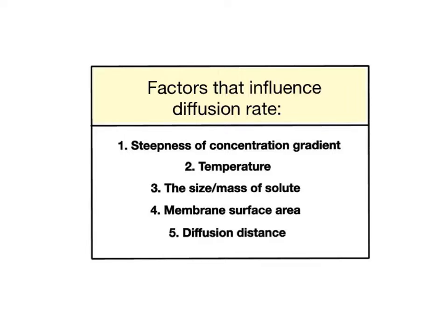There are many factors that influence the rate or speed of diffusion across a membrane surface, such as the steepness of the solute's concentration gradient, temperature, the size or mass of the solute, membrane surface area, and diffusion distance.